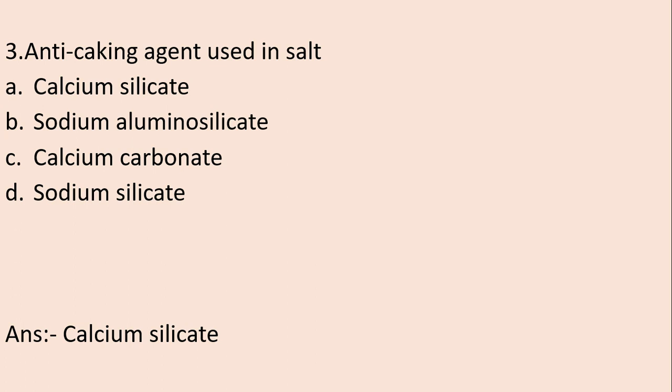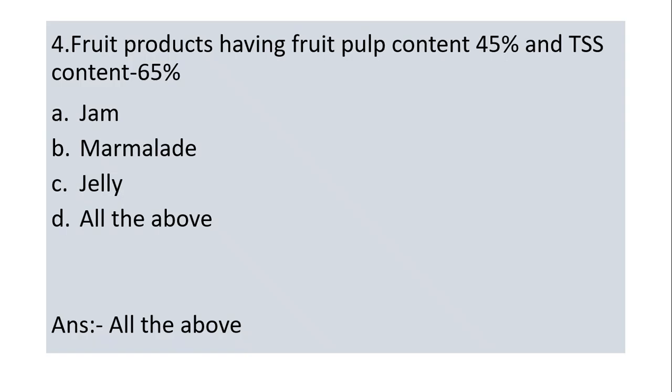Next question: Anti-caking agent used in salt. Options: Calcium silicate, Sodium aluminosilicate, Calcium carbonate, Sodium silicate. Answer is A, Calcium silicate. Sodium aluminosilicate is used as anti-caking agent in milk powder.